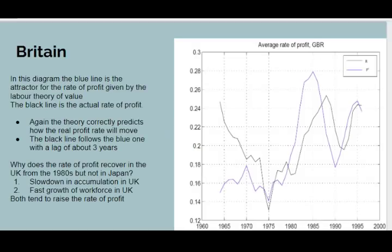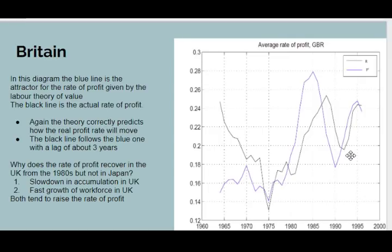Britain has a more complicated shape. In this case, the black line is the actual rate of profit, and the blue line is the predictor derived from our formula. Again, the theory correctly predicts how the real rate will move. Starting out, the real rate is falling towards what the attractor is attracting it to. Then the attractor starts moving up again and the real rate follows. The attractor starts falling, and shortly afterwards the real rate starts falling. Note that this has a very different shape from Japan — in fact Britain is typical of most European countries, which all have this shape over time.